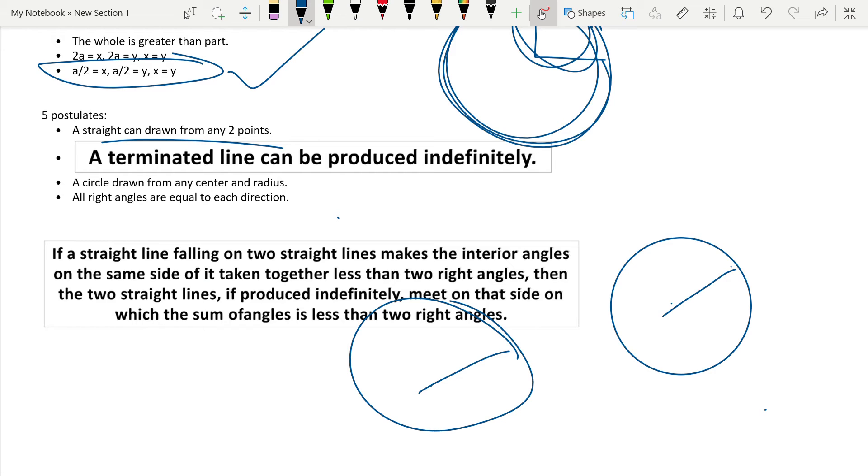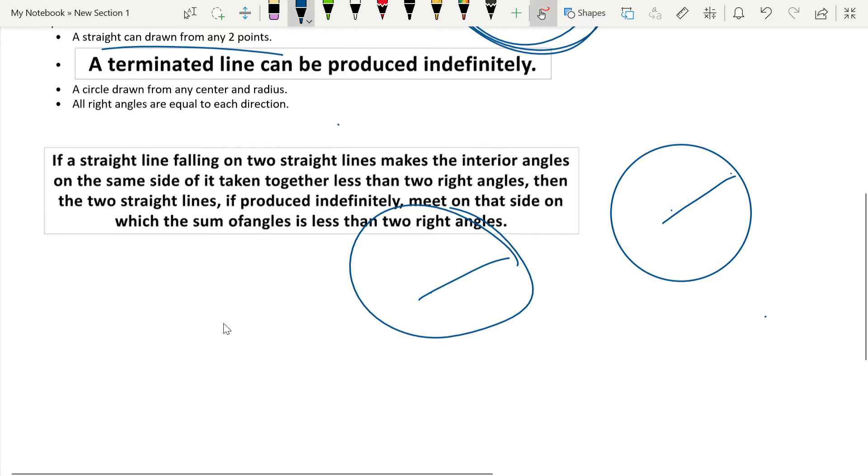All right angles are equal to each other, in no matter what direction they are. Meaning if you have this right angle and if you have this right angle, they are equal. If you have this right angle and if you have this right angle, they all are equal. All right? Very easy, very self-explanatory, but you know, things to learn.